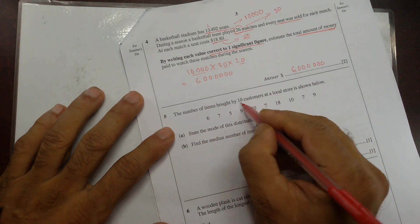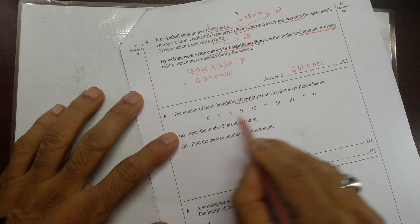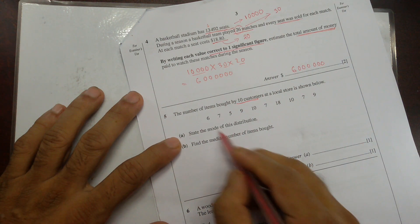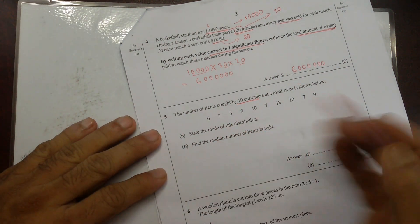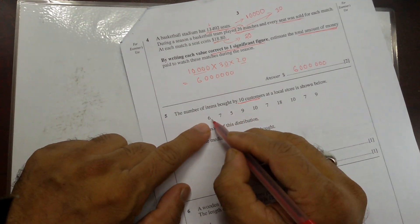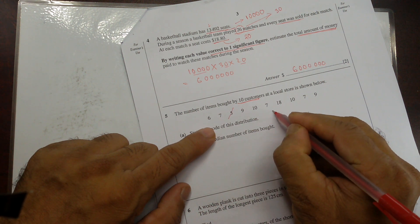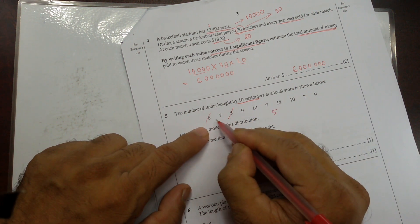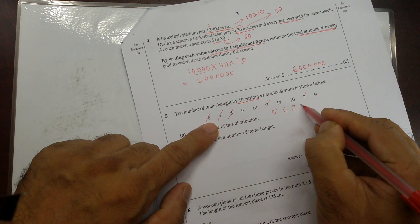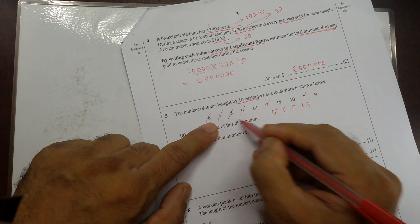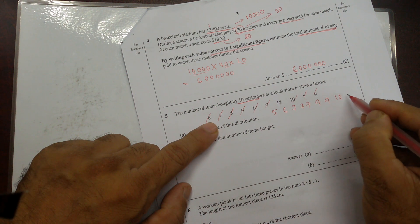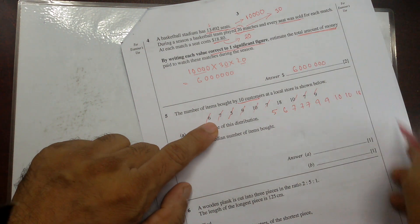Next one. The number of items bought by 10 customers at a local store is shown. So you can see that this is raw data, not organized data. State the mode and median. So when we have the raw data, we have to organize that from small to big or ascending order. The smallest number is 5, so cross that one, write down over here, 5. Then 6, I have just 1. Then 7, 1, 2, 3, 3 sevens. Then I have no 8, 9, 2 of them, 9, 9. Then 2 tens, 10, 10, and then 18.